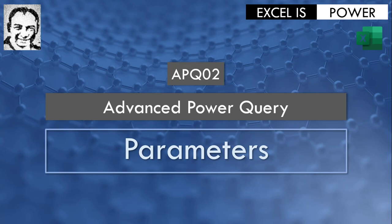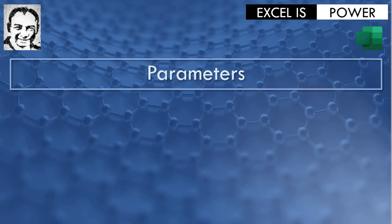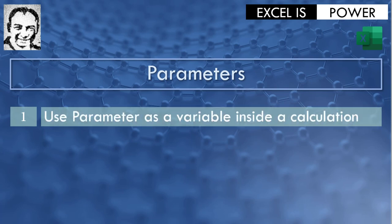Hello and welcome to a new video from the Advanced Power Query series. In this video, APQ02, we are going to discuss parameters. A parameter is a variable that you can declare inside the Power Query editor and use inside a function, inside a calculation, or even to change the source of your data file. We are going to see four things in this video: first, how to use a parameter as a variable inside a calculation.